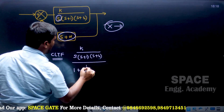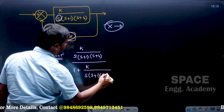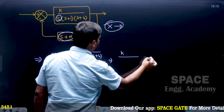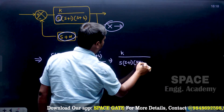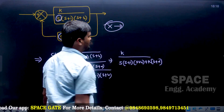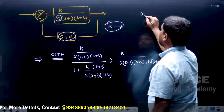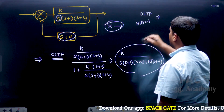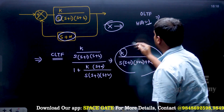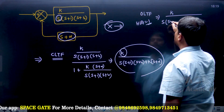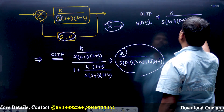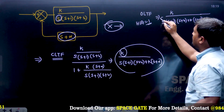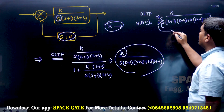The closed-loop transfer function becomes: K / (s(s+1)(s+4) + K(s+α)). Now, after obtaining the closed-loop transfer function, convert it into the open-loop form by assuming unity feedback. Using the shortcut: open-loop TF = numerator / (denominator − numerator) = K / (s(s+1)(s+4) + K(s+α) − K). In the entire denominator, the common power of s is s^0, so this is a Type 0 system.